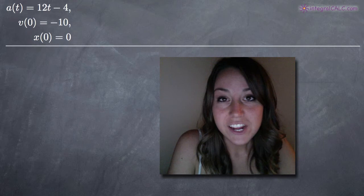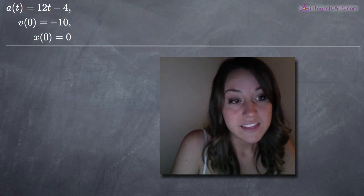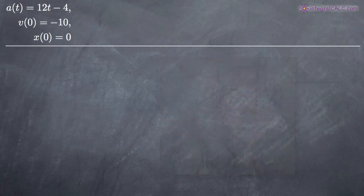Today we're going to be doing a rectilinear motion problem. We've been given the acceleration function a(t) = 12t - 4. We've been given the initial velocity, v(0) = -10. And we've also been given the initial position, x(0) = 0.